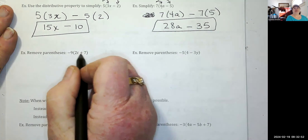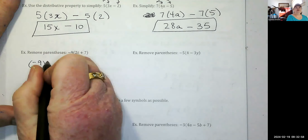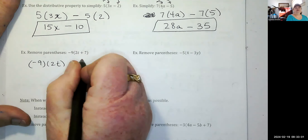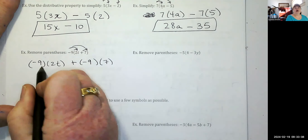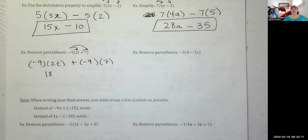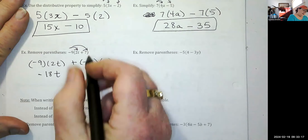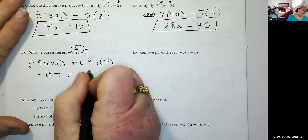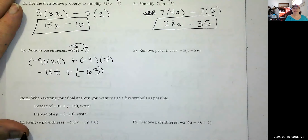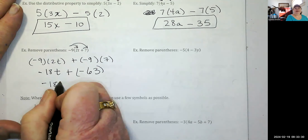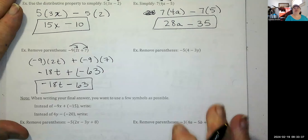Negative nine times the quantity 2t plus 7: negative nine times 2t plus negative nine times 7. Nine times two is 18, signs are different, so negative 18t. Plus nine times seven is 63, but negative times a positive is negative — so this changes our sign to negative. The answer is negative 18t minus 63.